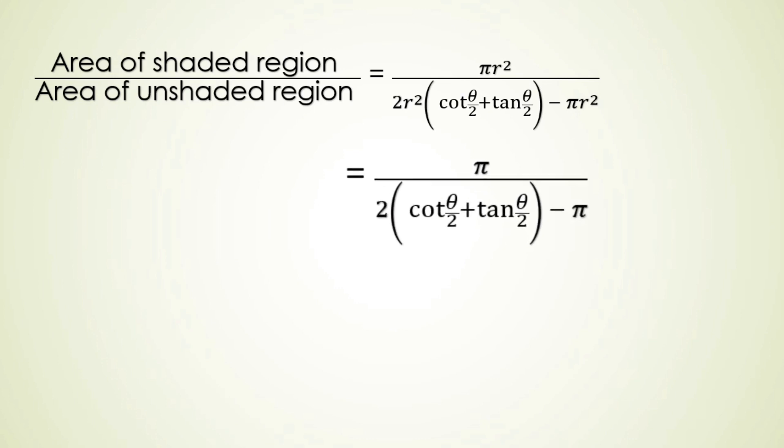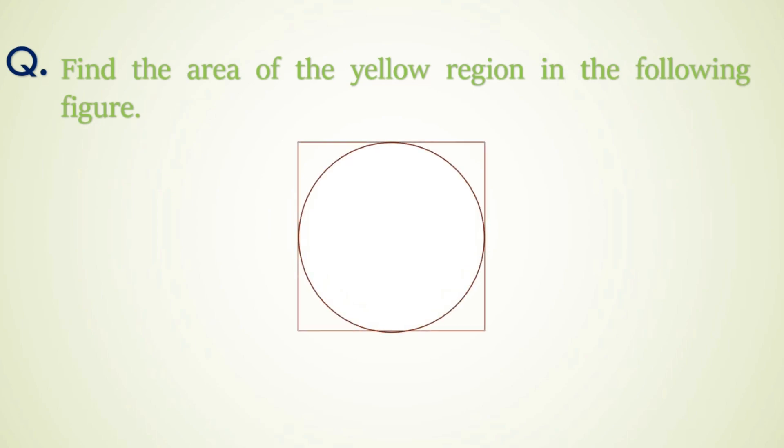Find the area of the yellow region in the following figure. Here we have a circle in square touching all four sides of the square. We have another circle which is touching the previous circle and the square at a common point and the difference of diameters of the two circles are given two units.